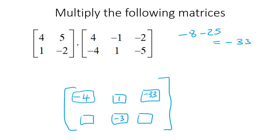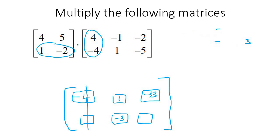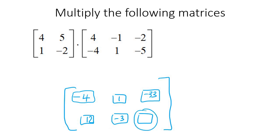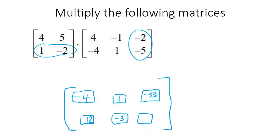For row 2, column 1: 1 times 4 is 4, and -2 times -4 is 8, so that gives 12. For row 2, column 3: 1 times -2 is -2, plus -2 times -5 is positive 10, giving 8. So our 2 by 3 answer matrix is: -4, 1, -33 in row 1, and 12, -3, 8 in row 2.